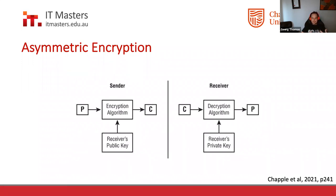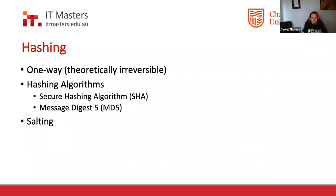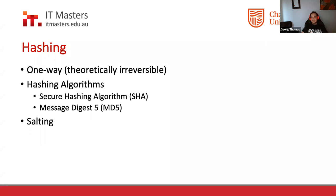In a web server example, the public key is available on the web server; the browser uses it to encrypt data and send it over; the private key installed on the web server is used to decrypt. That's how hybrid encryption works in practice.